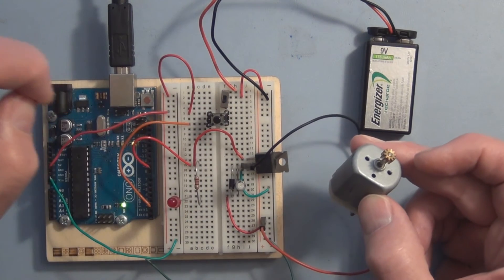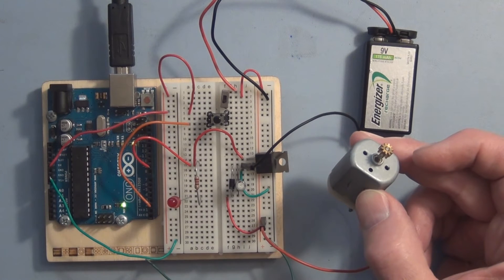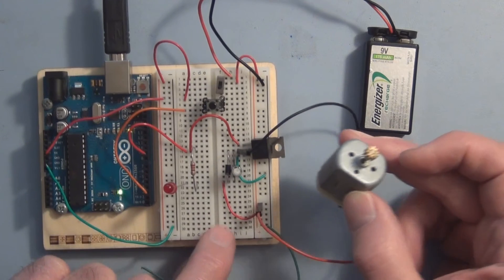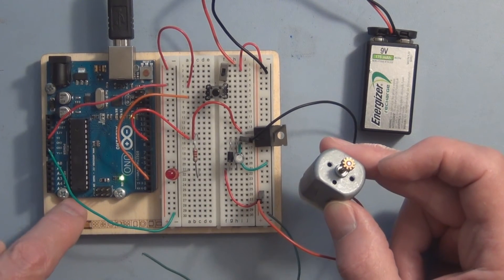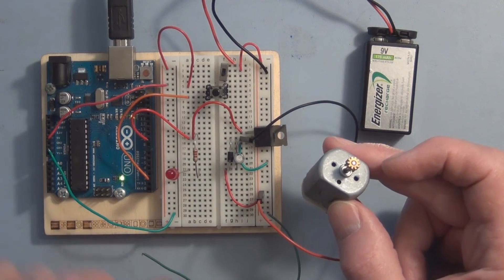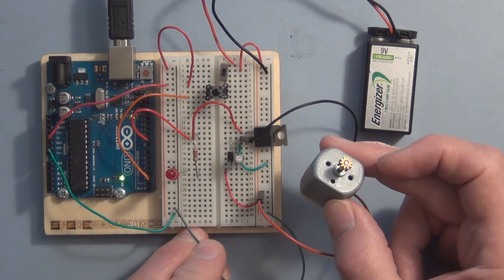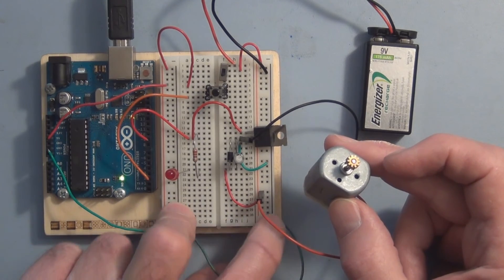One of the problems is that I don't have the grounds tied together from the MOSFET circuit to the Arduino board ground. So that's one of the issues here. So let me connect that ground up.